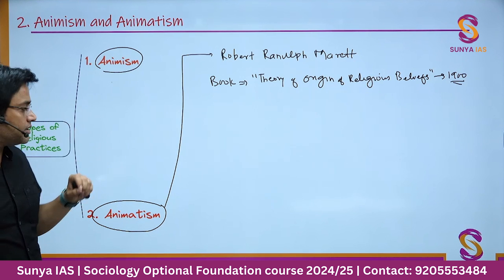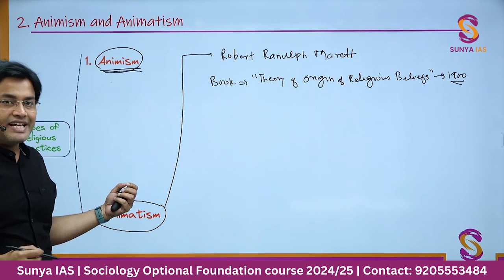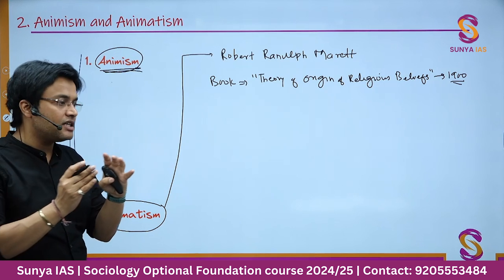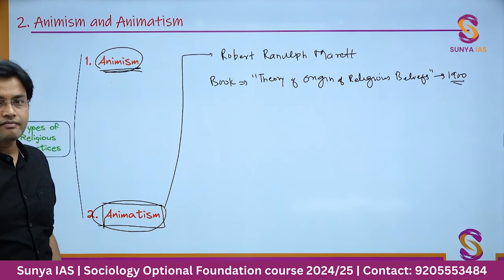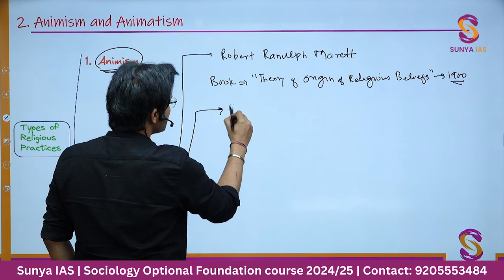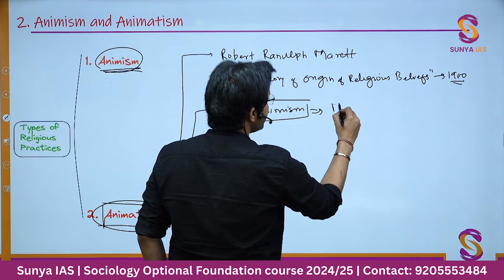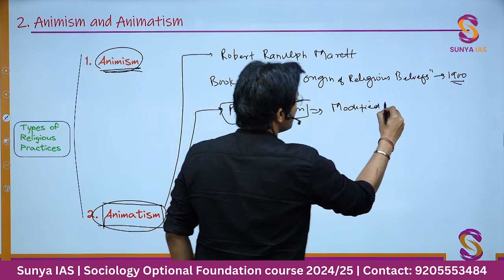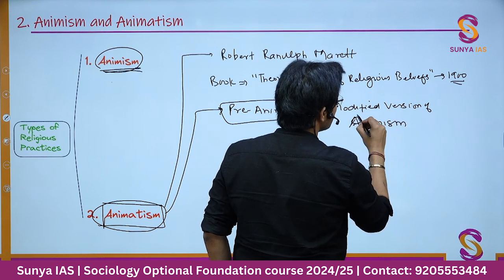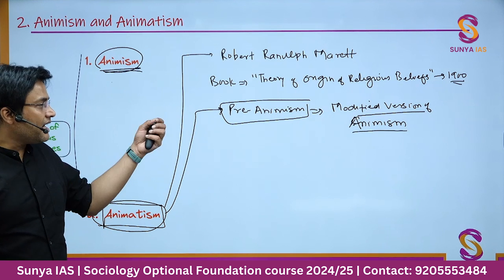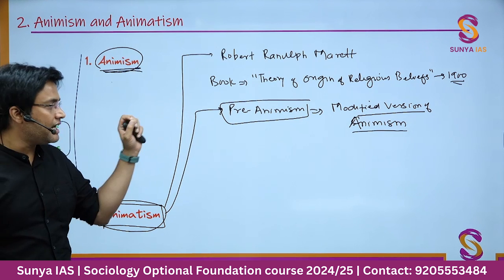R.R. Merritt basically modified the theory given by E.B. Tyler because he says that it is not animism that actually signifies the origin of religion. Rather, before animism there was the presence of animatism. So animatism is also sometimes known as pre-animism — it is a kind of modified version of animism.